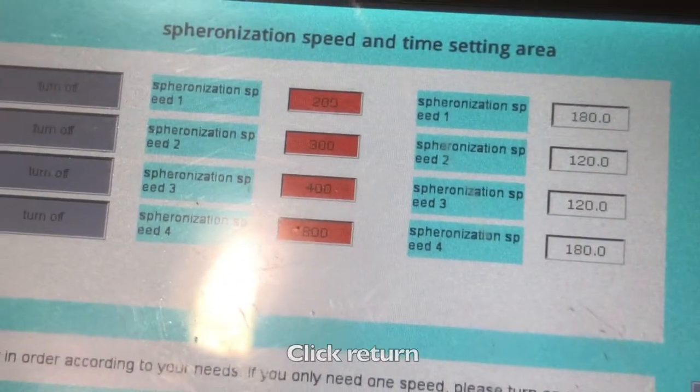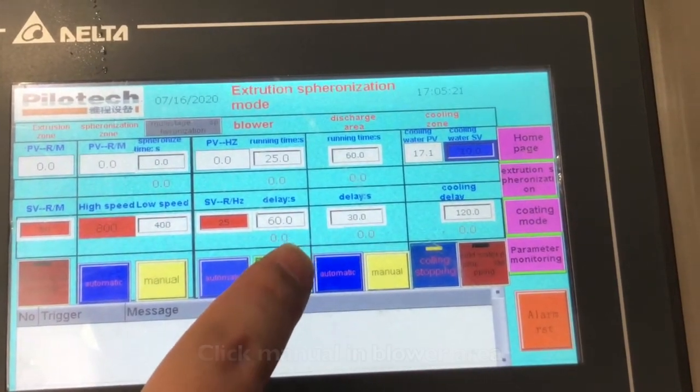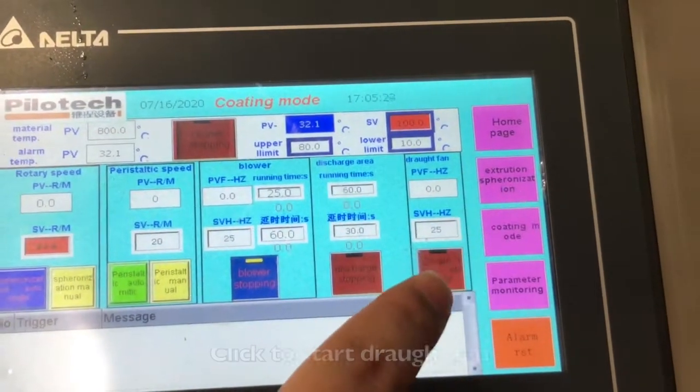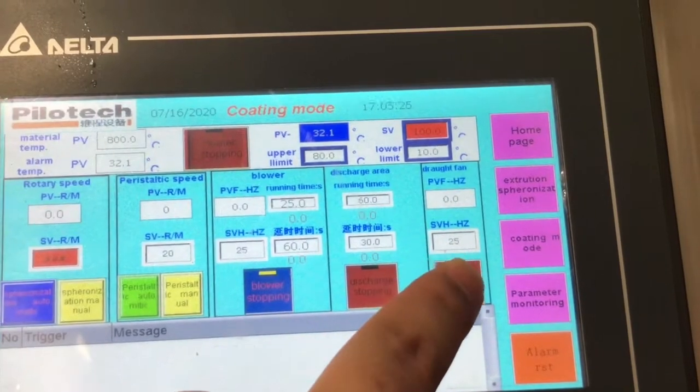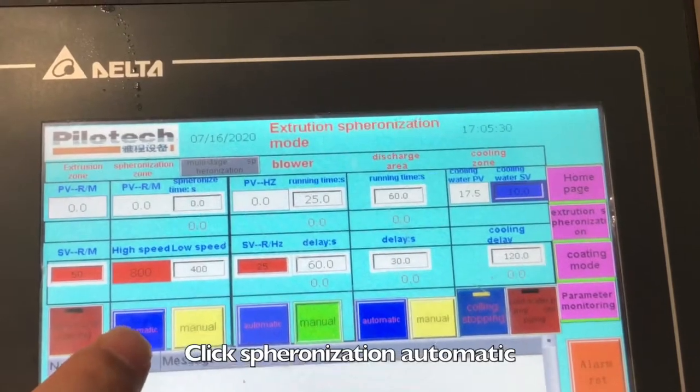Click return. Click manual in blower area. Click coating mode. Click to start draft fan. Then click extrusion spheronization. Click spheronization automatic.